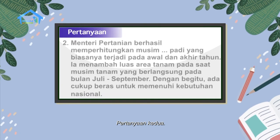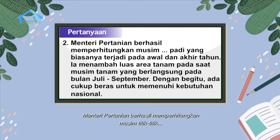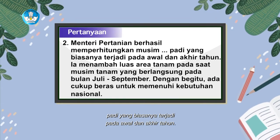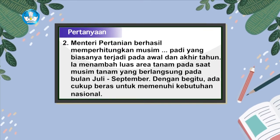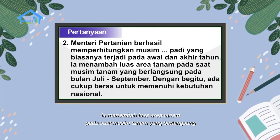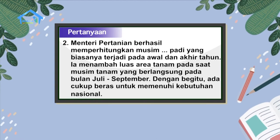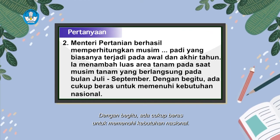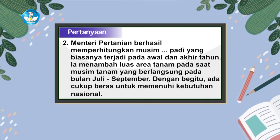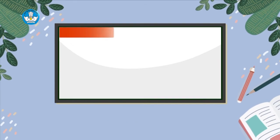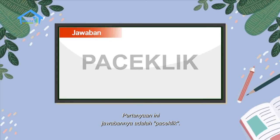Pertanyaan kedua: Menteri Pertanian berhasil memperhitungkan musim titik-titik padi yang biasanya terjadi pada awal dan akhir tahun. Ia menambah luas area tanam pada saat musim tanam yang berlangsung pada bulan Juli hingga September. Dengan begitu, ada cukup beras untuk memenuhi kebutuhan nasional. Jawabannya adalah paceklik.